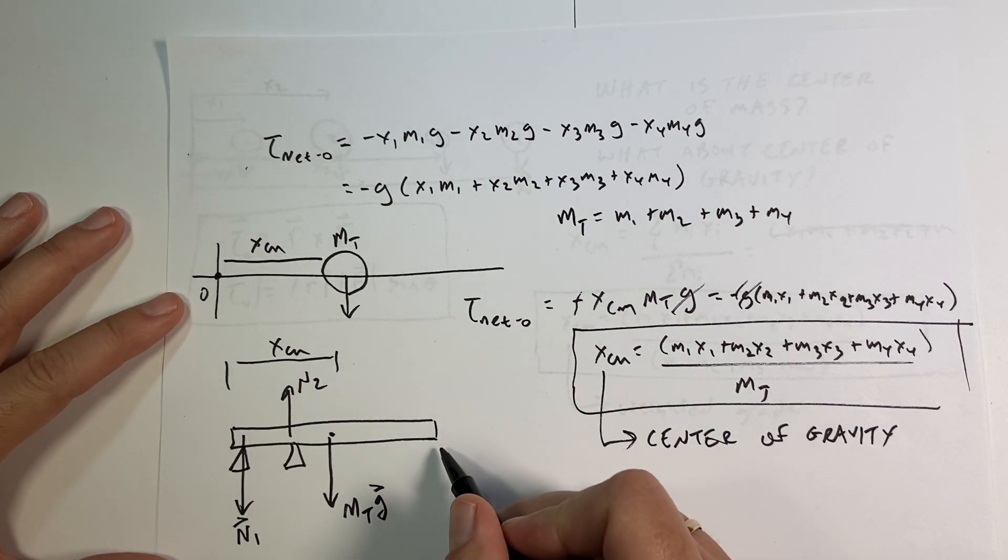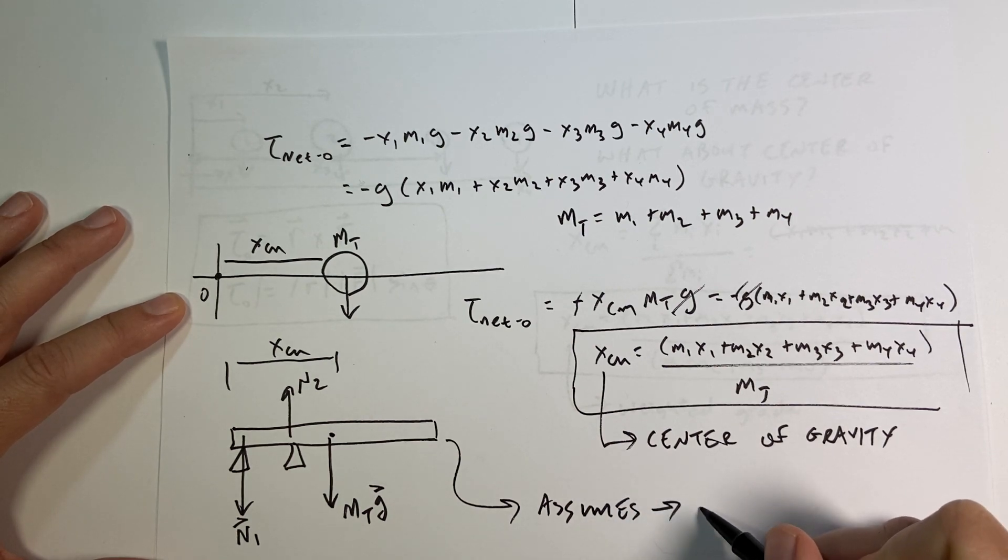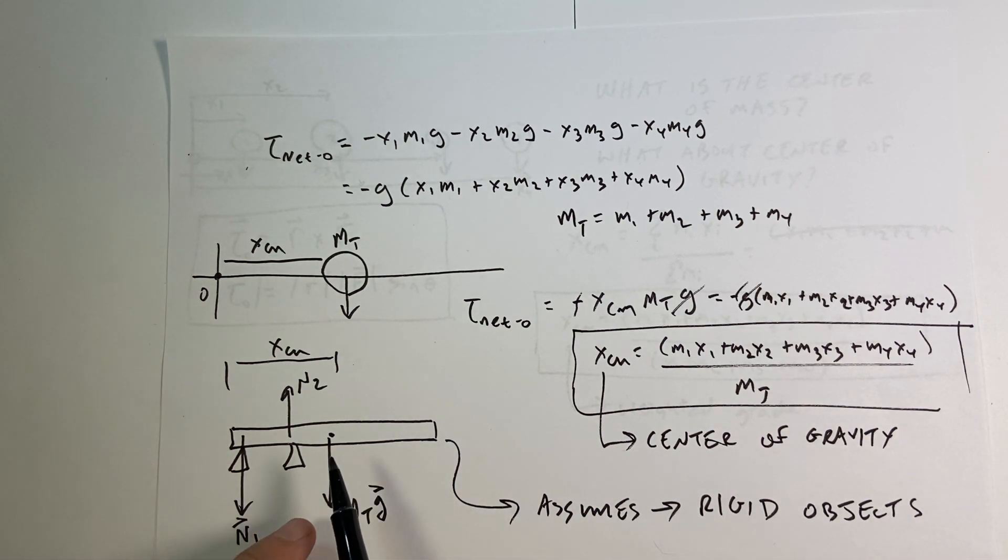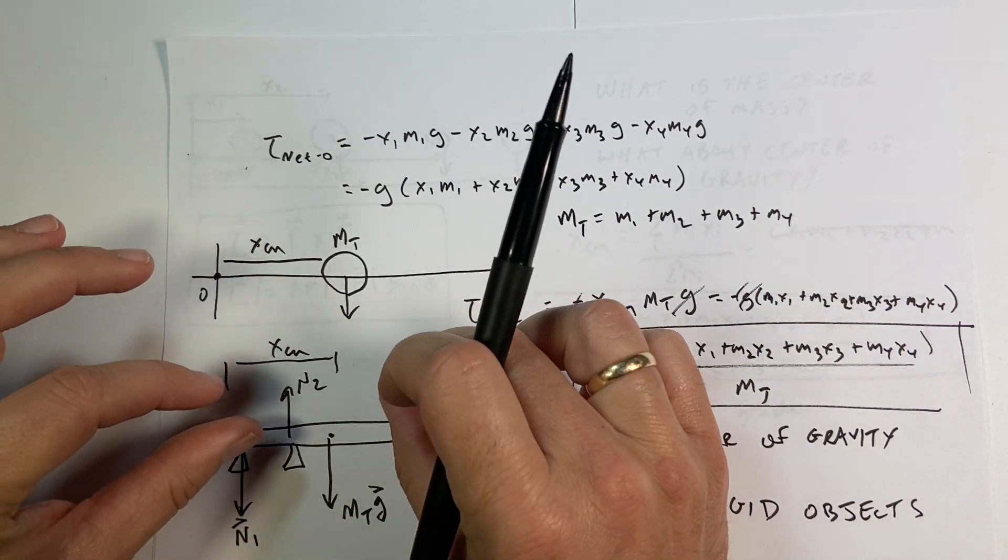This assumes something: rigid objects. Because imagine that this was a piece of jello, and I tried to support it. It would bend and stuff. And so putting just one single force in there wouldn't completely model the whole situation.